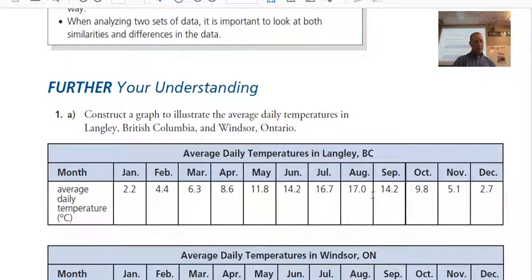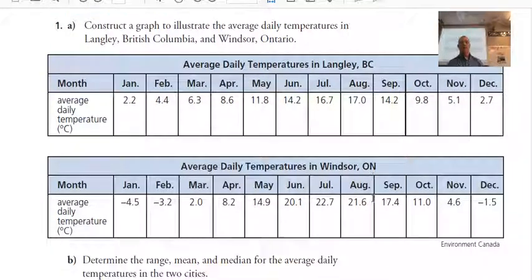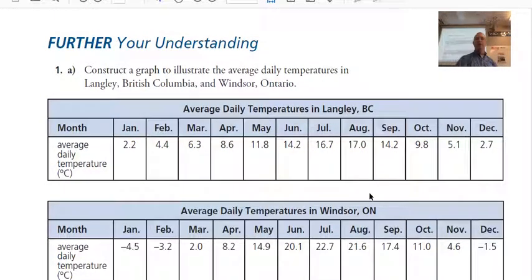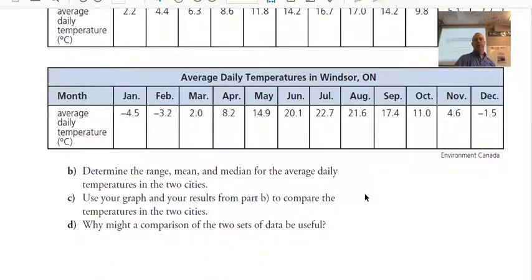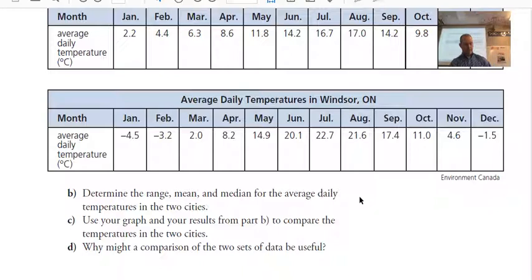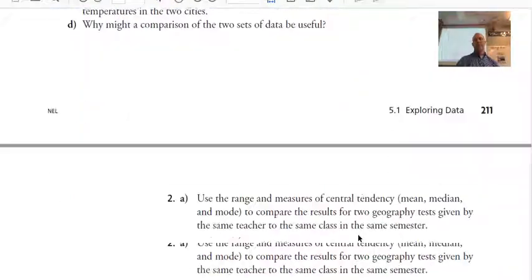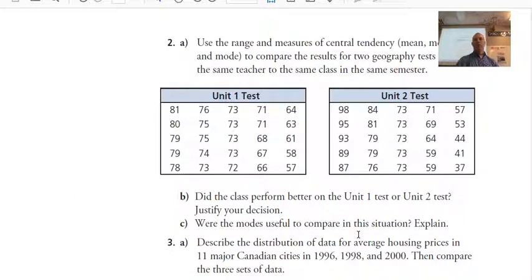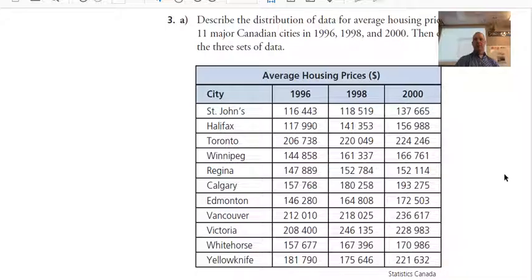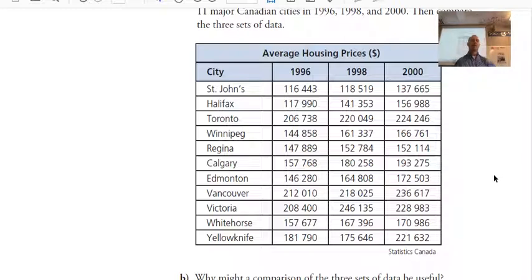I am going to get you to do question number one and number three for your assignment. So, here is, here's number one, the data for number one. Questions that go along with number one. You may want to do two as well as it relates to kind of a school situation. And, here's the data for number three. Yeah, number two would be optional, but focus on number one and three, please.